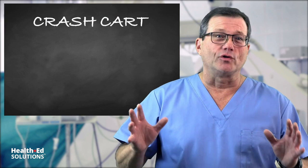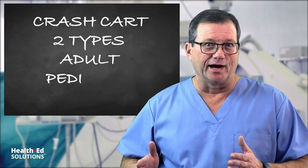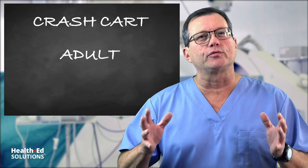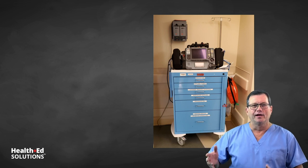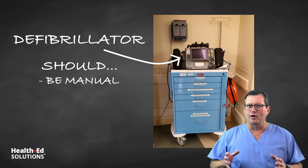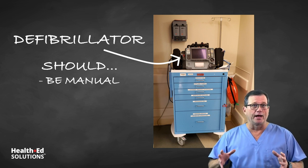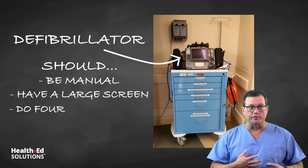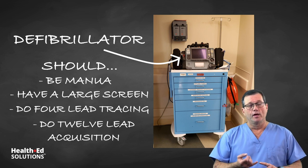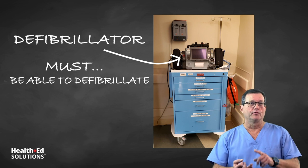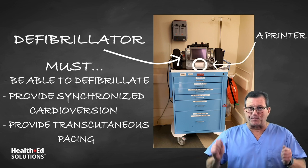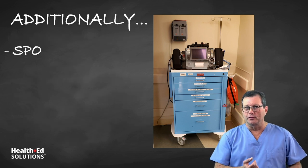The whole thing would tip over, crash — crash cart. So crash carts basically come in two flavors: adult and pediatrics. There are some specialty crash carts too, like for an MRI unit where you can't have any metal. For the adult crash cart, at the head of the table is the defibrillator. It should be manual — you wouldn't want to use an AED on a hospital crash cart. It should have a big enough screen, do a regular four-lead tracing, do 12-lead acquisition to look for a STEMI, and must be able to defibrillate, provide synchronized cardioversion, and transcutaneous pacing. It should have a printer.